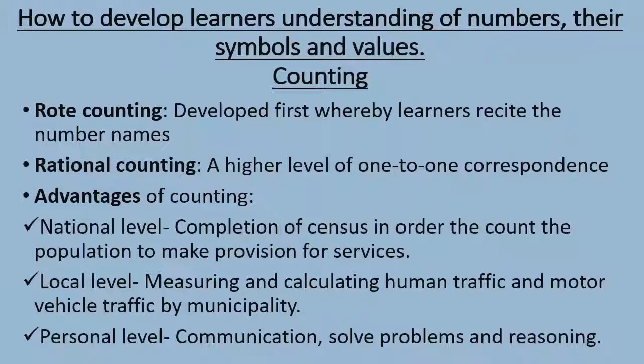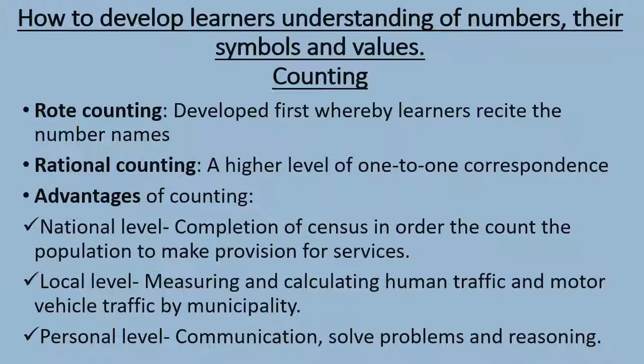To develop the learner's understanding of numbers, their symbols, and values — when it comes to counting, we have two different ways: rote counting and rational counting. Rote counting is developed first in any child; the child just recites the names. Most children at this age know how to count to 10 or even 20, but most do not understand how many it is. I can ask my child to count to 10, but it doesn't mean the child knows how many 9 is — if I ask them to go get me 9 stones, they might not be able to. That is rote counting — simply the reciting of numbers without understanding.